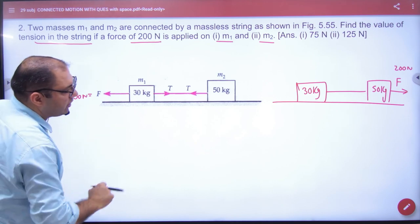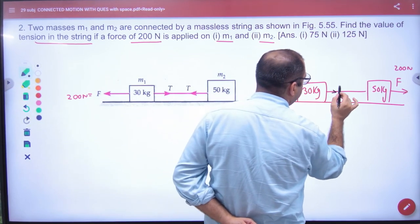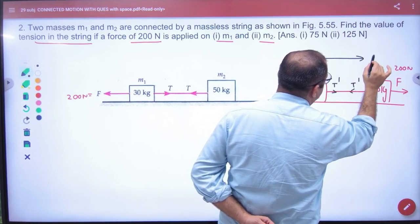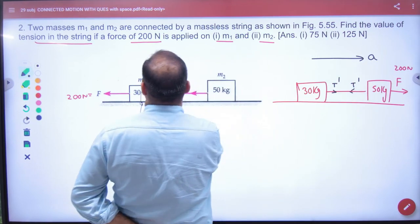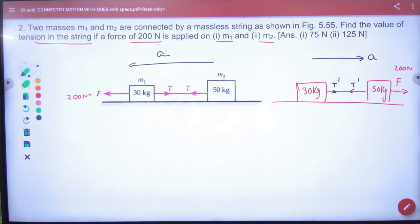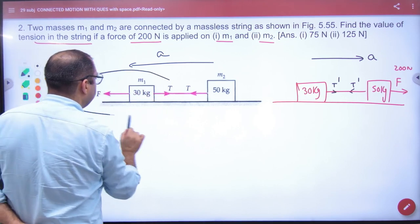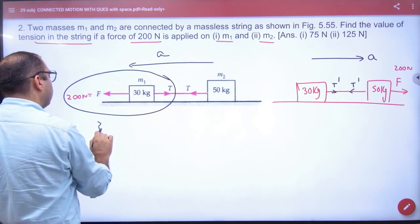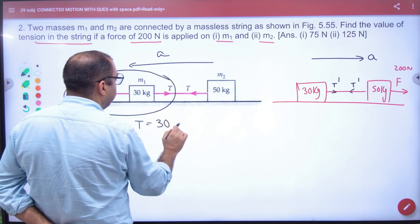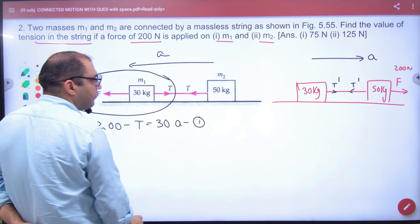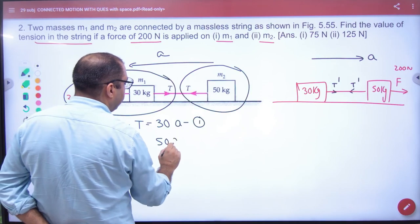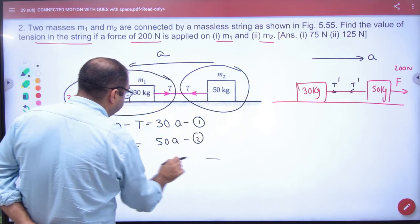So two times to solve the numerical. Tension T and T here, tension T dash and T. This system will move here with an acceleration of A. So what will be the equation in the free body diagram? Because it is going to be left, so 200 minus T is 30 into A. This is your first equation. Because it is going to be left, so T is equal to 50 into A. This is your second equation. Solve.